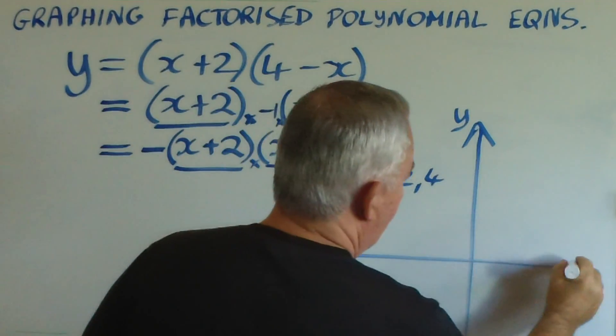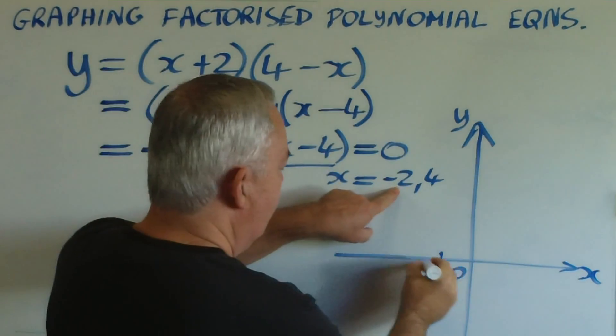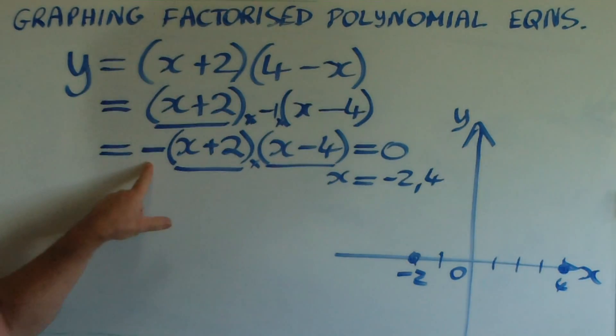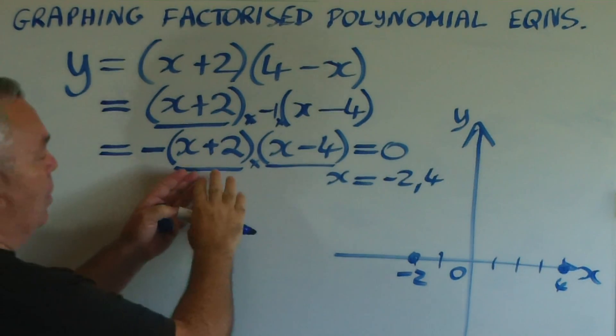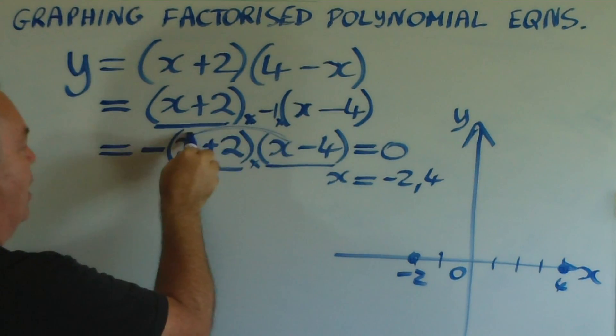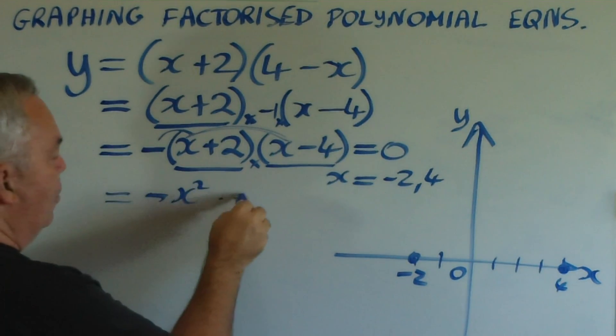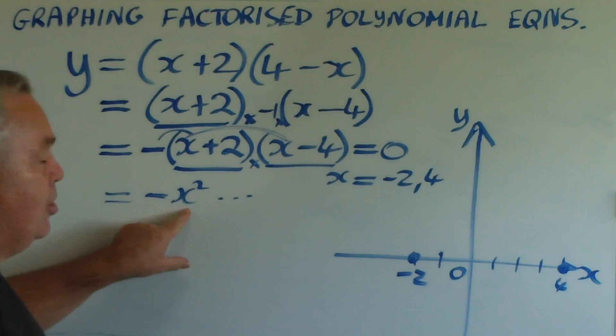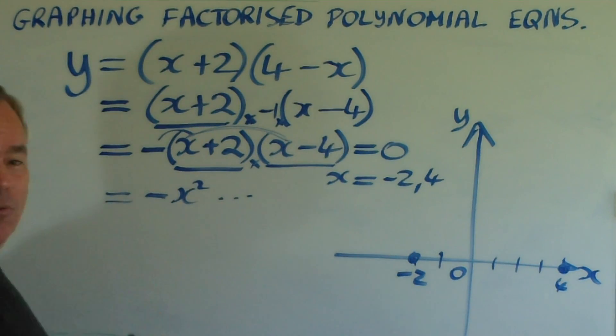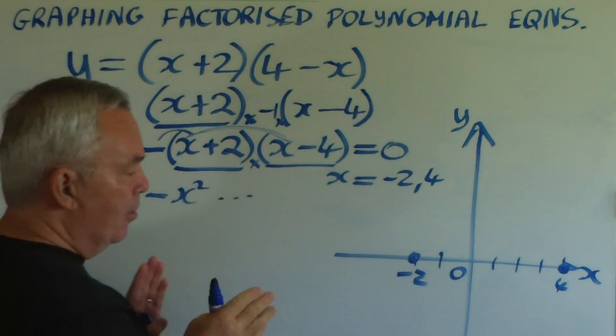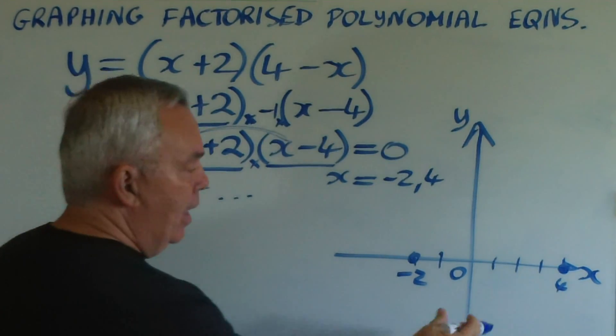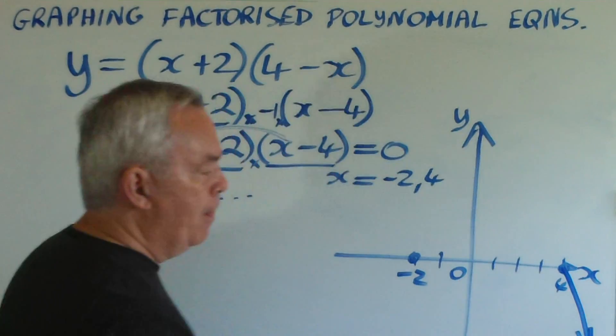We now graph the quadratic equation. A root at negative 2, a root at plus 4. But what does this minus sign do? Well, when we expand this quadratic equation, the largest term is going to be the x squared term, and it is going to have a minus sign in front of it. There will be other terms, but as x gets very large, this term will dominate. You can see that as x gets very, very large, x squared gets huge, and the minus in front makes it a huge negative number. In other words, the further we go towards large positive values of x, the larger a negative value y takes on. Therefore, the graph goes downwards at this end. As x increases, y decreases.